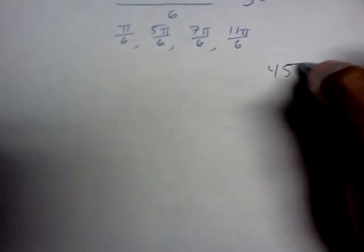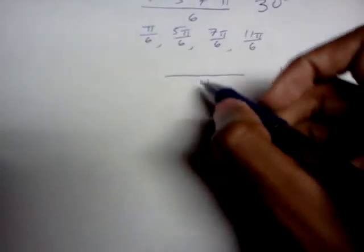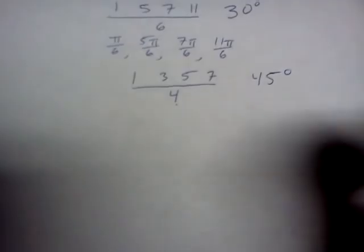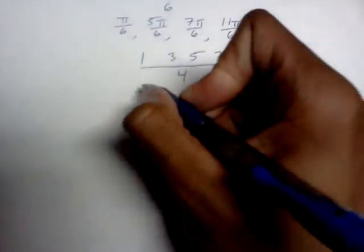Now moving on to 45 degrees, we note that the denominator is 4. The two numbers that sandwich 4 are 3 and 5. And adding left, subtracting right, 3 plus 4 is 7, 5 minus 4 is 1. And another note, after a while, you don't need to remember that the first one is 1 because it's always going to be 1 for all of them.